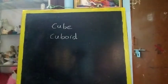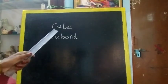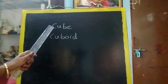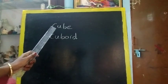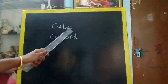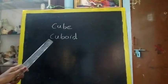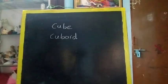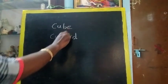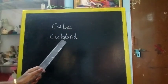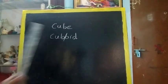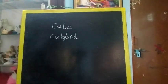Now let's learn the spellings. Cube — C-U-B-E. Cuboid — C-U-B-O-I-D. Cube-oid, O-I-D. C-U-B-O-I-D. So write each word 5 times and learn the spellings.